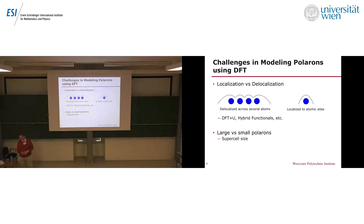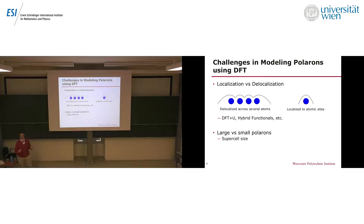There are also issues related to small polarons and large polarons, which we heard some discussion about in the last talk. A big part of this relates to the cell you use to model your system. If you use a small cell, you're artificially confining your system and unable to model a large polaron. The solution is pretty easy — just use a larger cell — but that means more computational time.